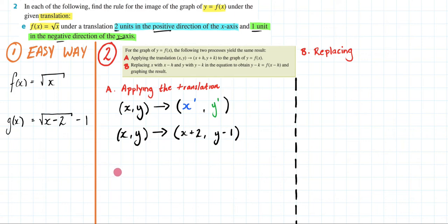And therefore x dash equals x plus two and y dash equals y minus one. So I could write that down. I could say x dash equals x plus two and y dash equals y minus one.